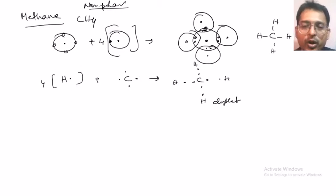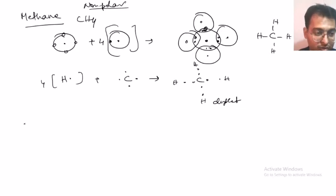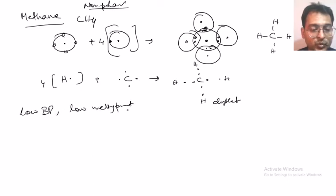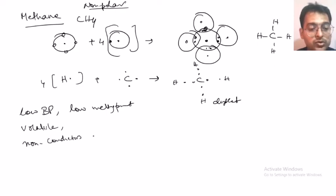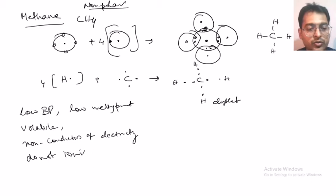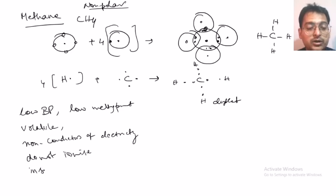The properties of covalent bonds: they generally have low boiling point and low melting point. They are volatile — like most organic compounds are also volatile. They are non-conductors of electricity. They do not ionize, unlike electrostatic bonds. Since they are mostly non-polar and do not ionize, they are mostly insoluble in water.